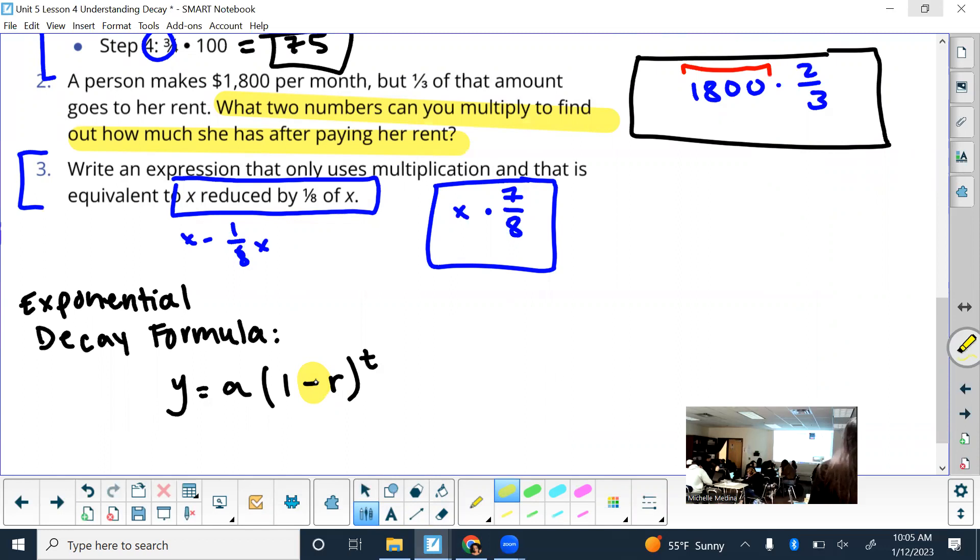I'm going to give you a formula, and you're going to write it on your paper. The exponential decay formula is going to be Y equals A parentheses 1 minus R close parentheses to the T power.